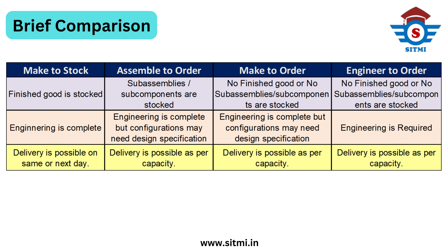Now let's see a brief comparison of all four strategies. In terms of what we stock: in Make to Stock we stock finished goods directly; in Assemble to Order we keep stock of sub-components, sub-assemblies, or raw materials; in Make to Order we keep neither stock of finished goods nor sub-assemblies or sub-components; and similarly in Engineer to Order we don't keep any stock of finished goods or sub-components or sub-assemblies.